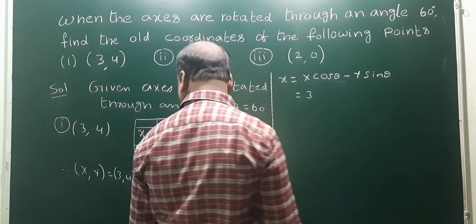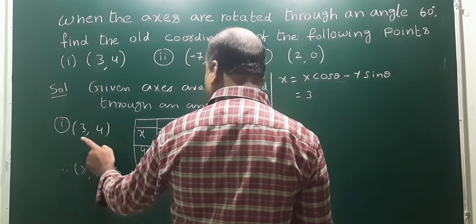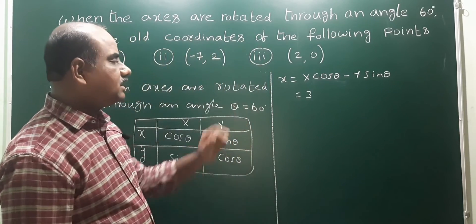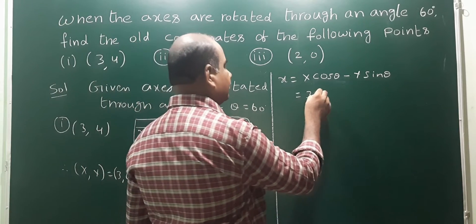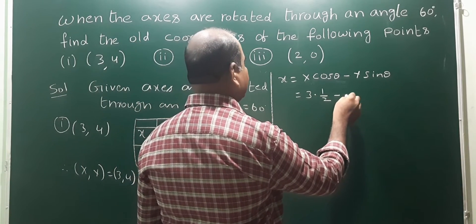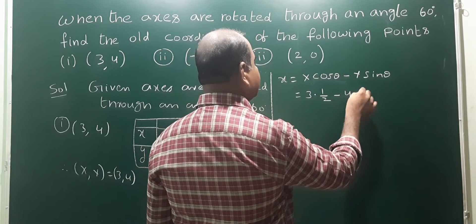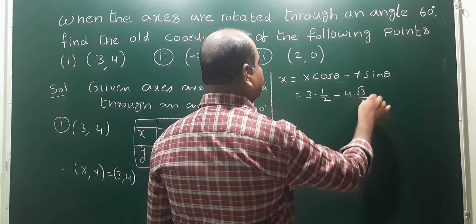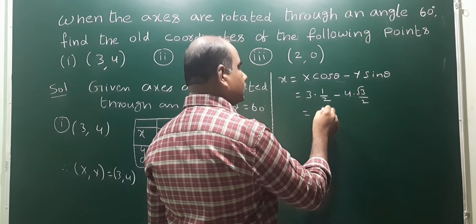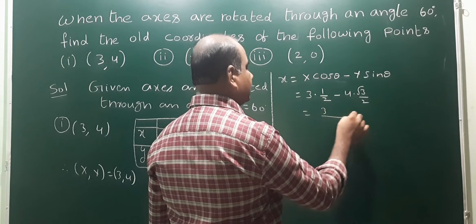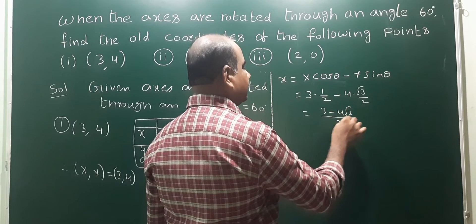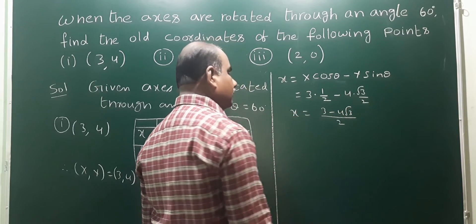Capital X means 3, capital Y means 4. Cos theta means cos 60, which is 1/2. So small x equals 3 into cos 60 minus 4 into sin 60. That is 3 times 1/2 minus 4 times root 3 by 2. Taking LCM: (3 minus 4 root 3) by 2. This is the value of small x.